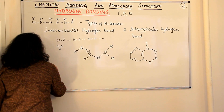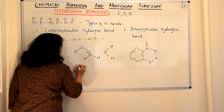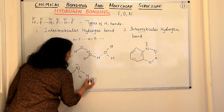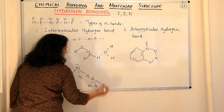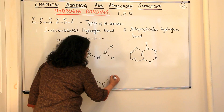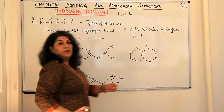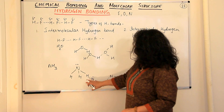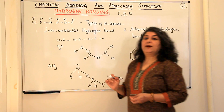If you take the example of ammonia, NH3, you see the same thing — nitrogen has a lone pair, and the H atoms are attached. A nitrogen here would form a hydrogen bond. In ammonia, the hydrogen of one molecule forms a hydrogen bond with the nitrogen of an adjacent molecule. So this is an intermolecular hydrogen bond.